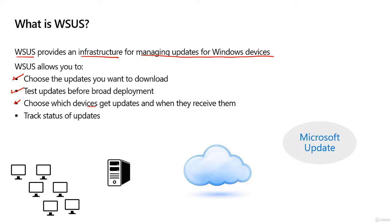We can also choose which devices get updates and when they receive them. You could have a small group receive updates first to verify stability, then deploy to the entire environment. This also gives the ability to track update status — if an update failed to install or a computer is missing updates, you can identify that. For example, if someone has been on vacation with their computer powered off, they may have fallen behind on updates.